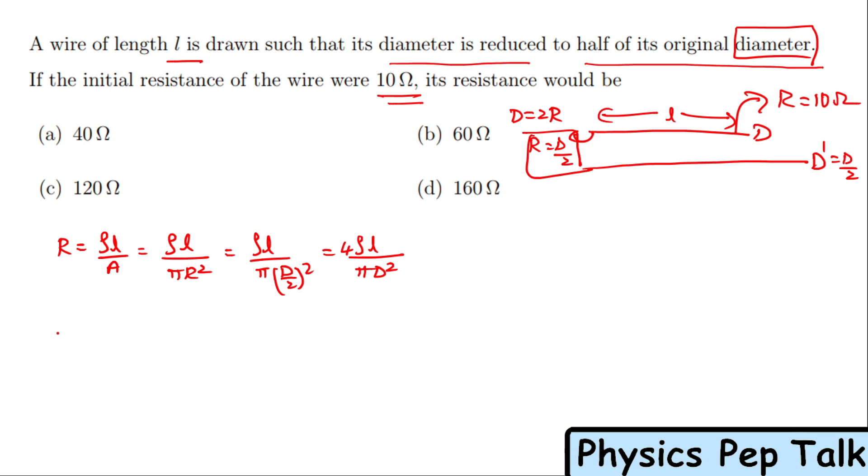After stretching, let's call that resistance R'. R' = ρL'/(πR'²), which equals 4ρL'/(πD'²). Since R' and D' are related, this becomes 4ρL'/(π(D'/2)²).